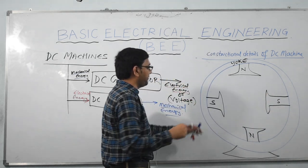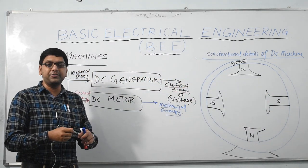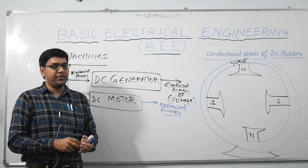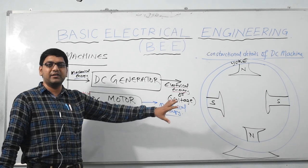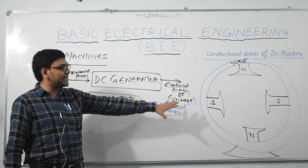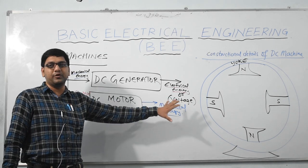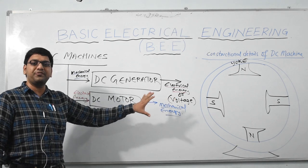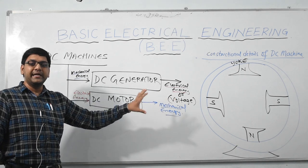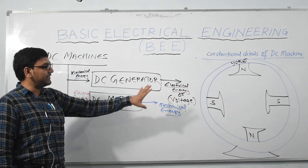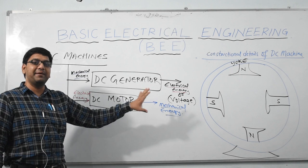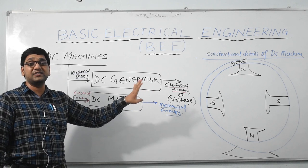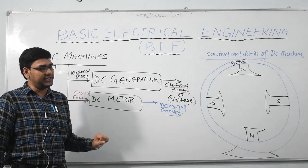These are the magnetic poles, and the DC machine could be of different pole configurations — for example, 2-pole, 4-pole, or 8-pole. For this explanation I am considering a 4-pole machine, so it is called a 4-pole DC machine.